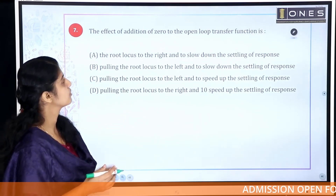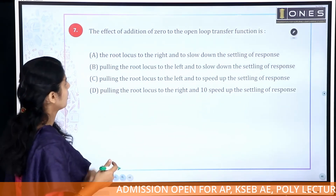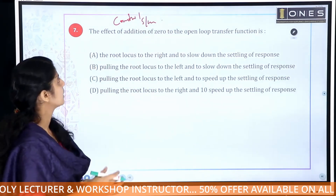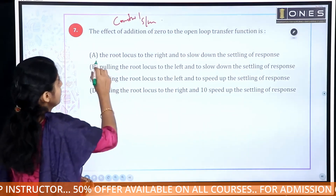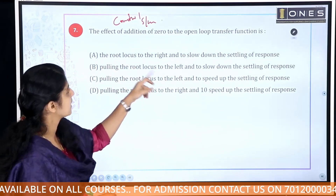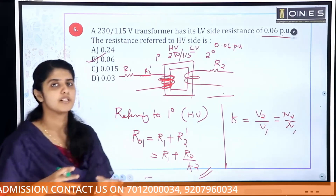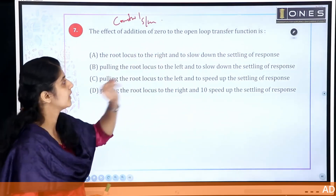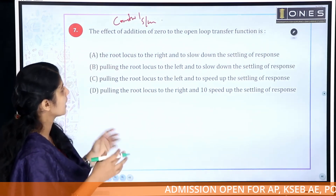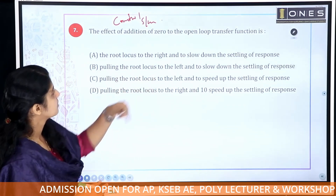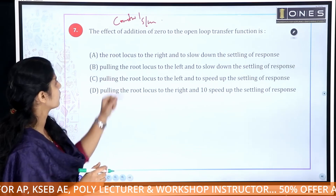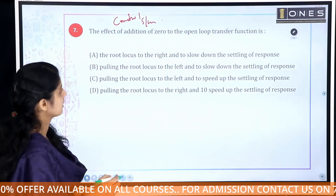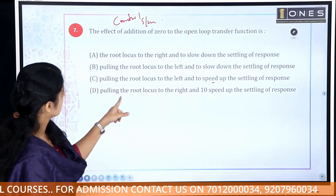Control system question: What is the effect of addition of a zero to the open-loop transfer function? The options include: root locus shifts to the right and slows down the settling response; pulling the root locus to the left and slowing down the settling response; pulling the root locus to the left and speeding up the settling response. The correct answer is option C — pulling the root locus to the left and speeding up the settling response.